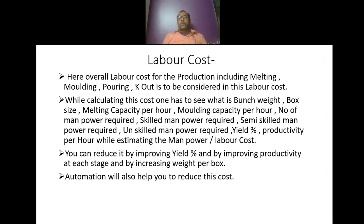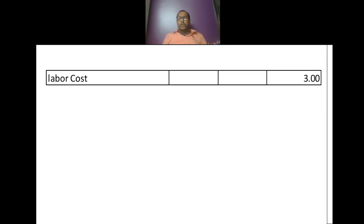Labour cost: overall labour cost for production including melting, molding, pouring, and knockout needs to be considered. While calculating this cost, one has to look at bunch weight, box size of the line, melting capacity per hour, molding capacity per hour, number of manpower required — skilled, semi-skilled, and unskilled — yield percentage, and productivity per hour. You can reduce it by improving yield percentage and productivity at each stage, increasing box weight, and through automation. I have considered labour cost as Rs 3 per kg of good casting.